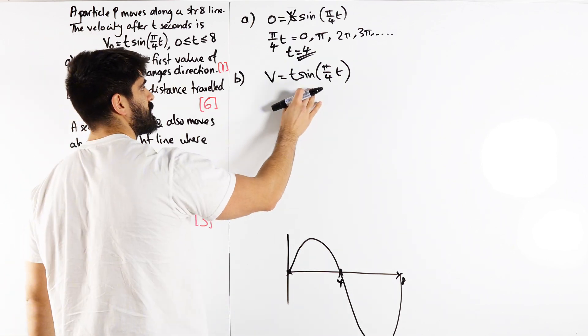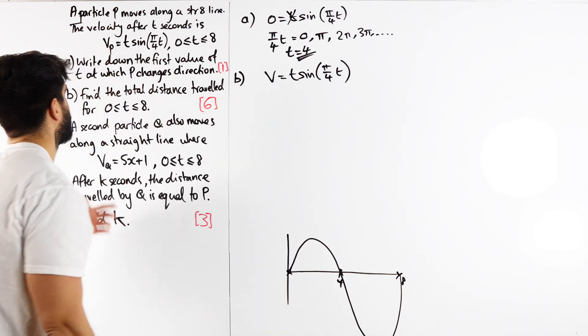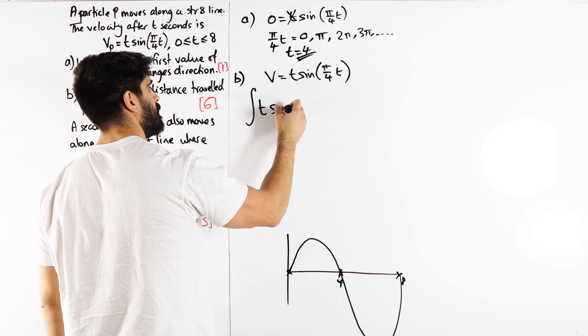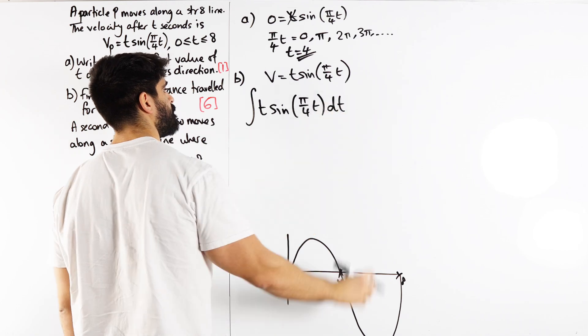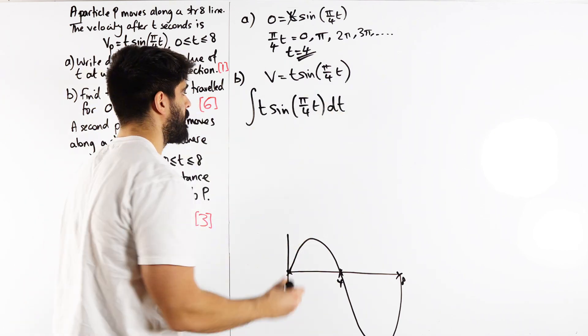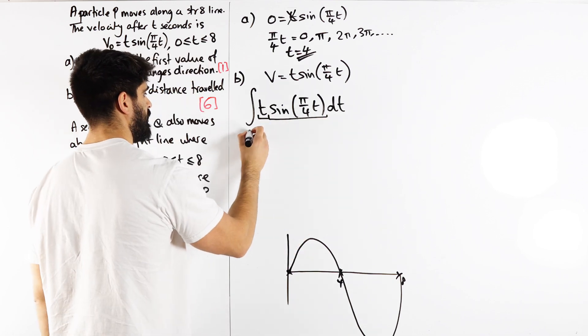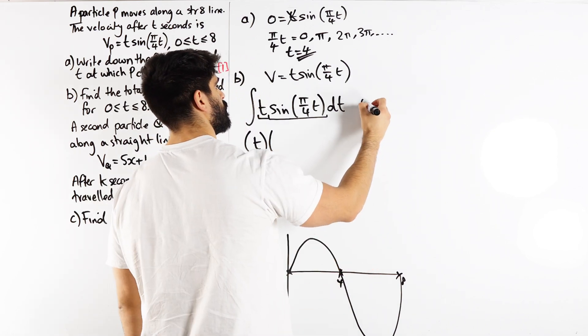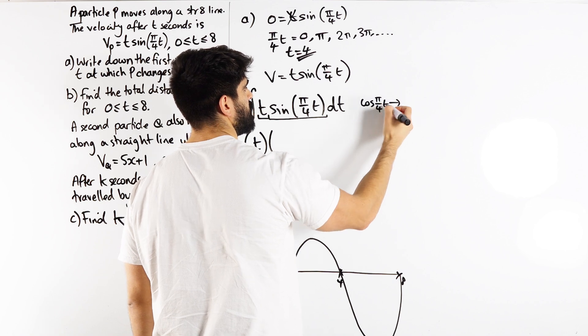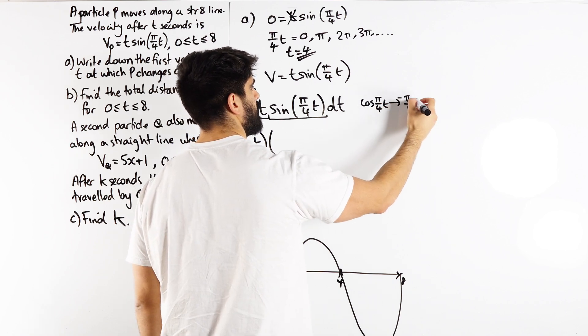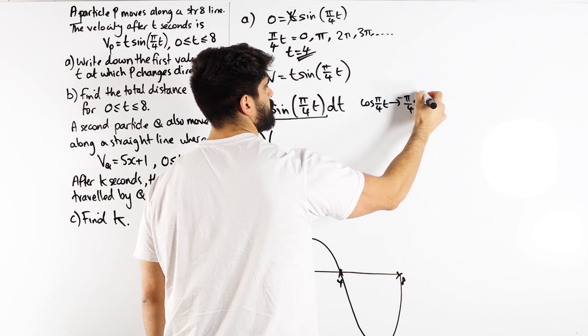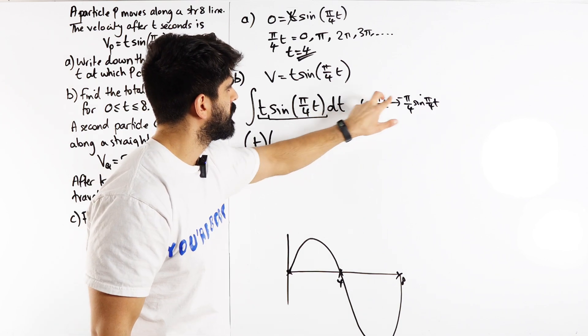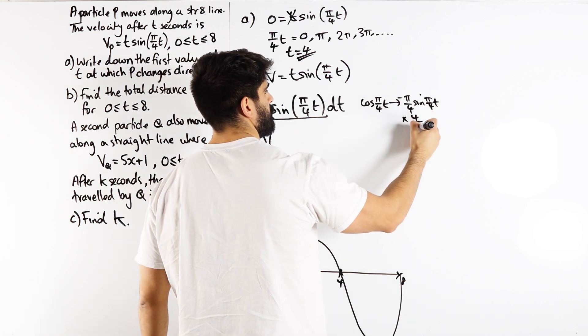The best way to do this is to integrate this first and then we'll do the limits. I want the exact value so we're not just going to rely on the calculator. We need to integrate t sin(π/4 t) dt. Integration by parts. We leave the first term, integrate the second. For sine, what differentiates to sine is cosine, so cos(π/4 t). Differentiate that, you get π/4. Cos goes to minus sine of π/4 t. But we wanted to integrate sine, so we times by 4 and divide by minus π. That's times by minus 4/π.